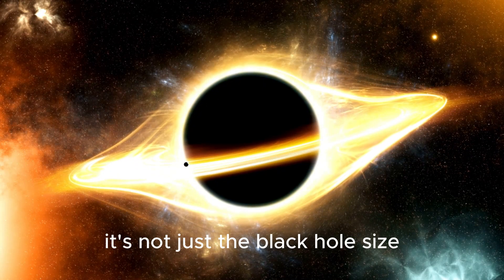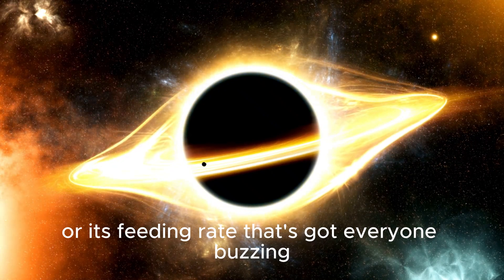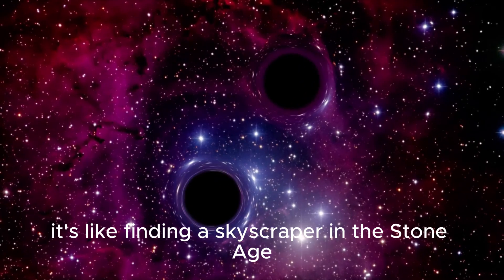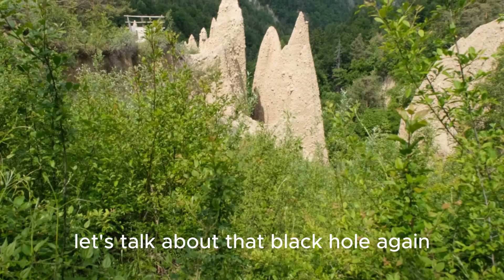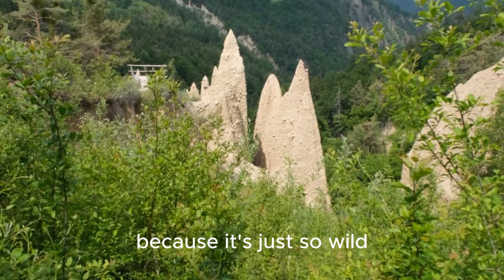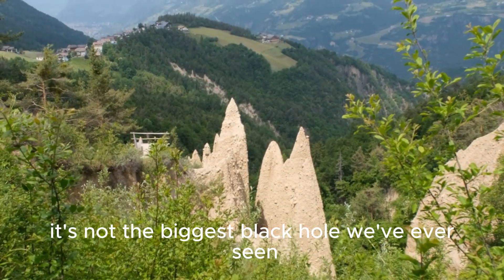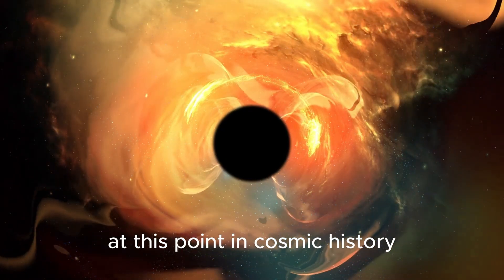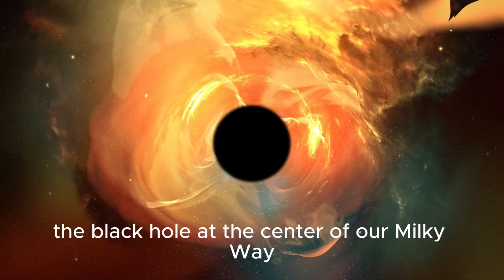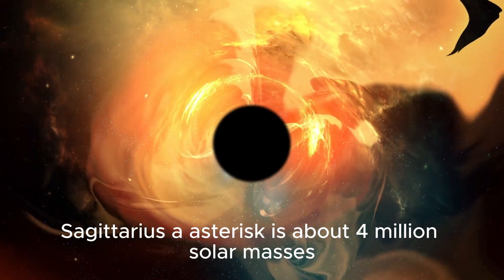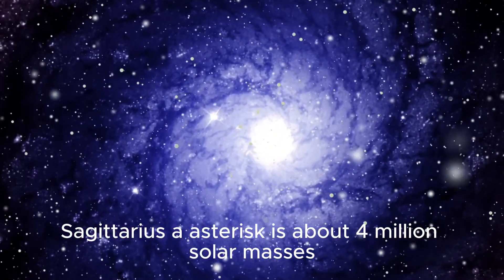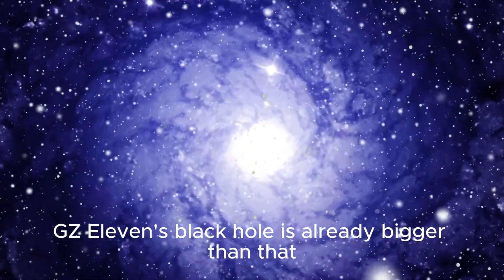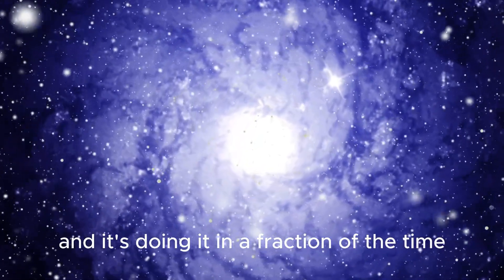It's not just the black hole's size or its feeding rate that's got everyone buzzing. It's the fact that it's there at all in a universe so young. It's like finding a skyscraper in the Stone Age. Let's talk about that black hole again because it's just so wild. At 6 million solar masses, it's not the biggest black hole we've ever seen, but it's way bigger than it has any right to be at this point in cosmic history. For comparison, the black hole at the center of our Milky Way, Sagittarius A asterisk, is about 4 million solar masses, and it took 13.8 billion years to get there. GNZ-11's black hole is already bigger than that, and it's doing it in a fraction of the time.